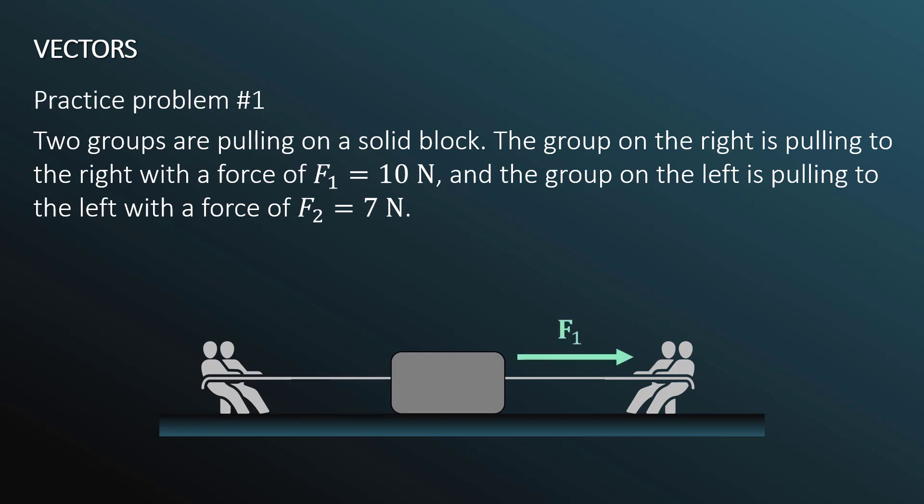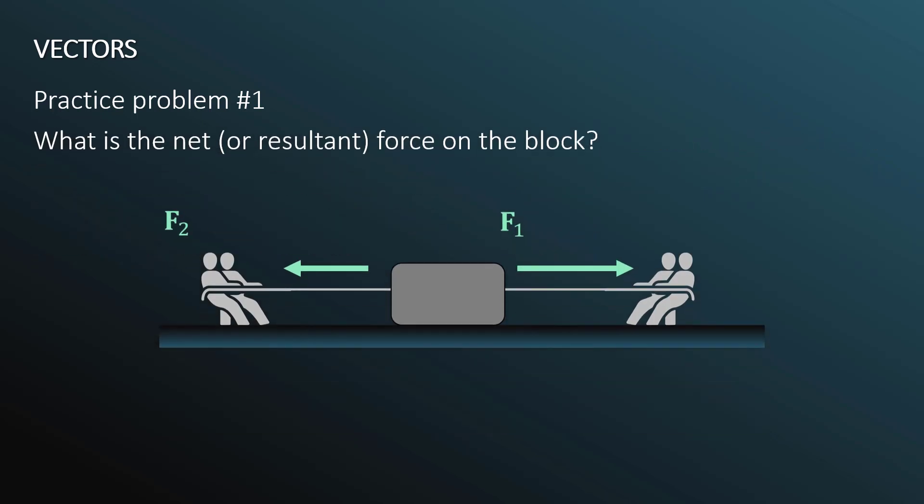So force one is to the right. I'm using the pictorial representation, using this arrow to the right. And f2 is to the left. What is the purpose of this example? We want to find the net or the resultant force on the block as applied by these two groups. In order to do that, we must establish a reference frame. This should be one of the first steps you take when solving any problem. You want to indicate which direction you are considering positive. Positive x, which is the horizontal, is denoted as rightward, and positive y, which is the vertical, is denoted as upward.